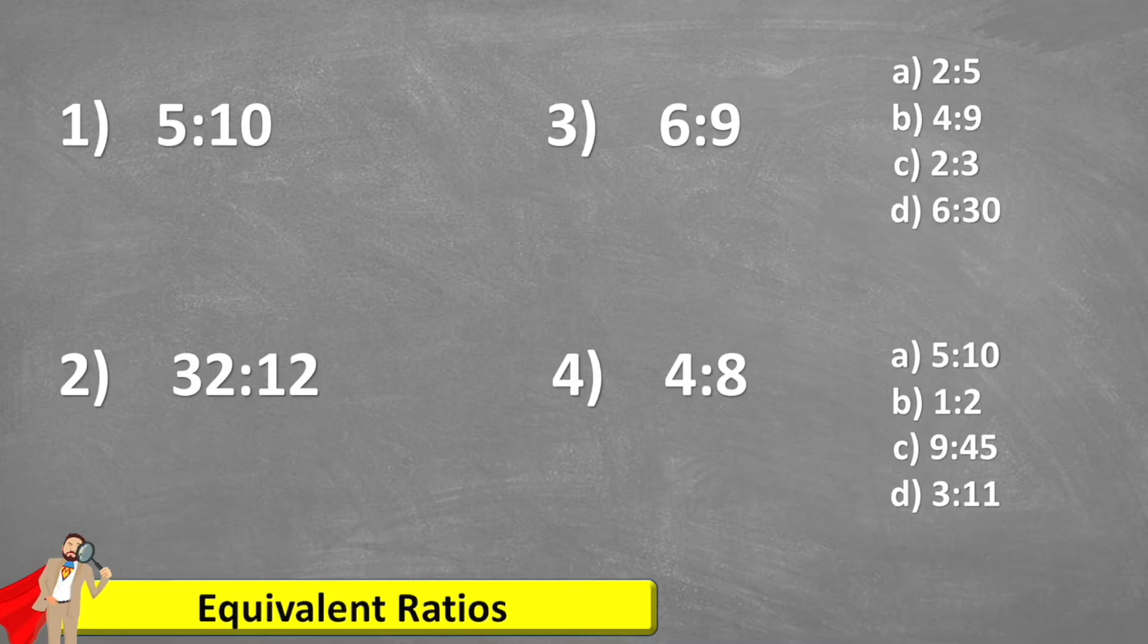So how do we go about finding equivalent ratios? Well, very similar to fractions, we are going to use multiplication and division. And we're going to follow the principle that whatever we do to one number, we have to do the same to the other.